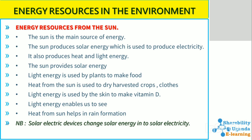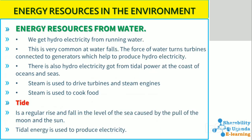Heat from the sun helps in rain formation. When it hits water bodies like lakes, evaporation occurs and water rises in the form of water vapor to the sky, which later forms rain that comes back to us.